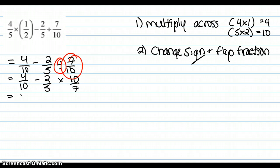So then our next step, we can actually multiply the 2 over 10 and the 5 and 7. So then we get 4 over 10 minus 20 over 35.